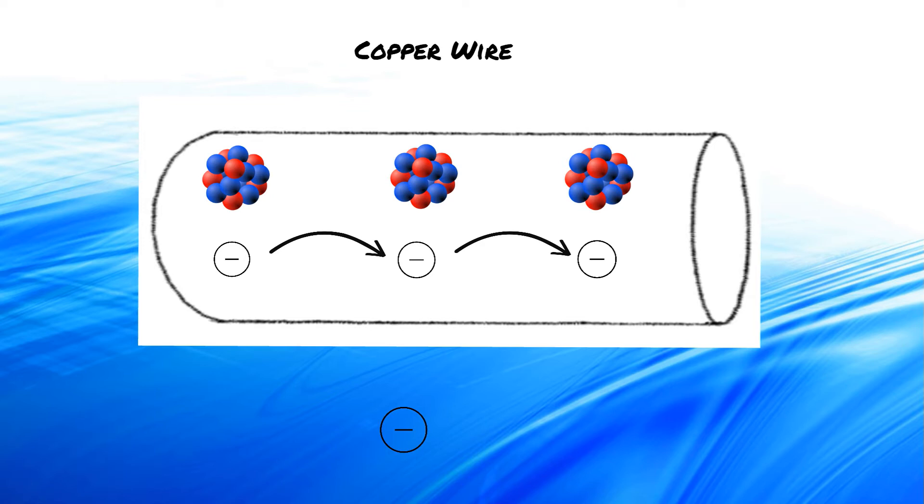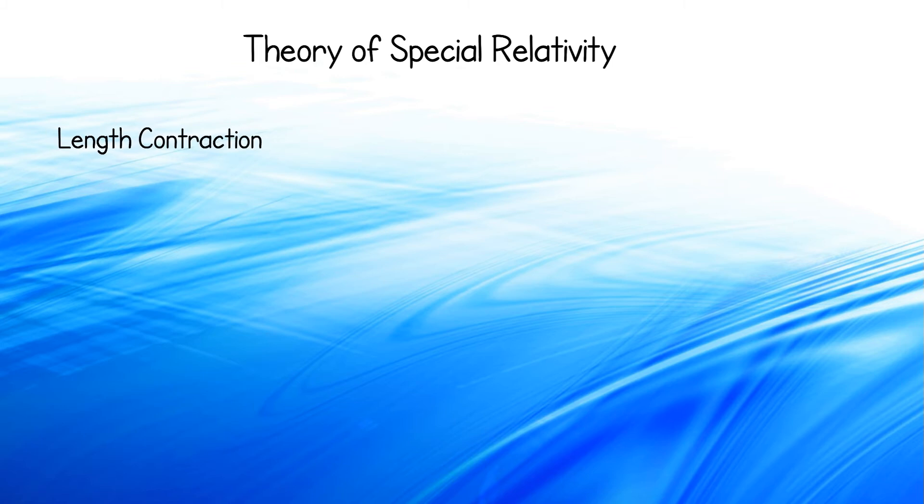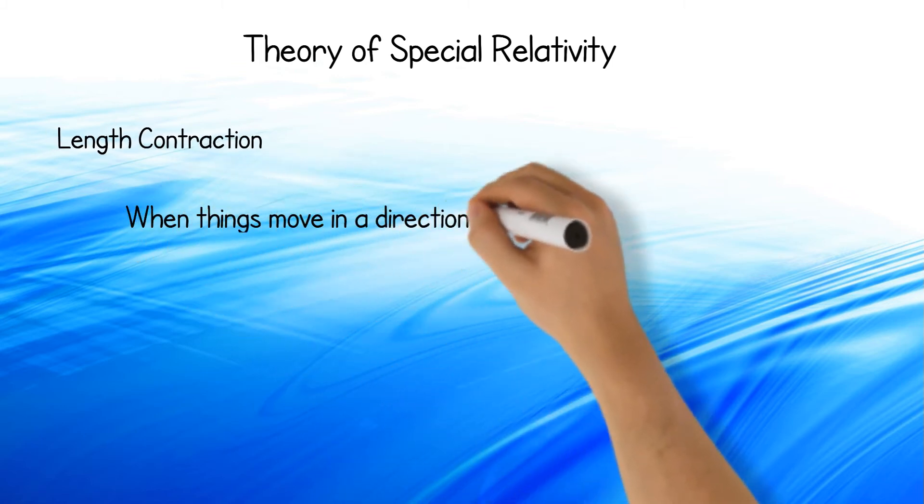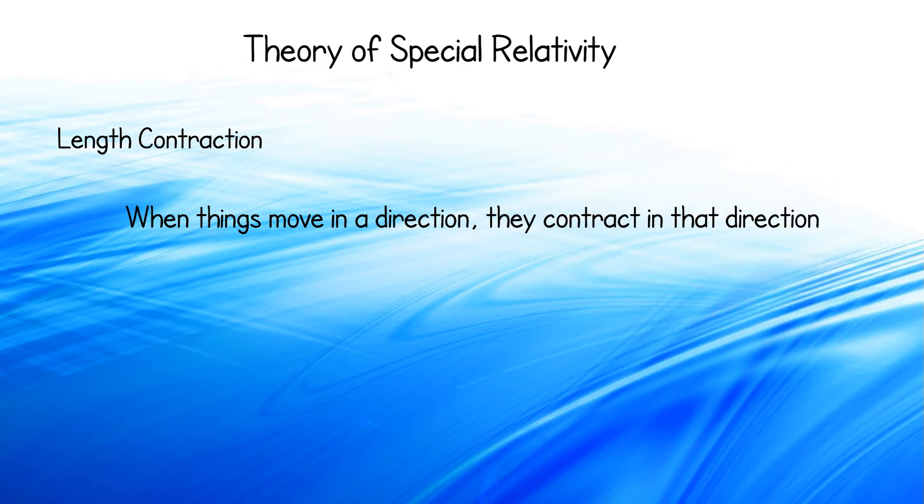This is because the overall density of electrons and cations remain the same. Most of us know that electrons are never still. What if we move one parallel to the flow of electricity? Interestingly, it is now attracted by the wire. This is because of relativity. Special relativity expresses the idea of length contraction, which explains that things, when moving, are slightly contracted in that direction due to perspective.